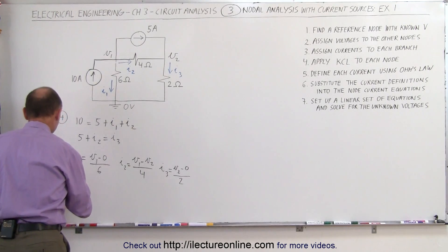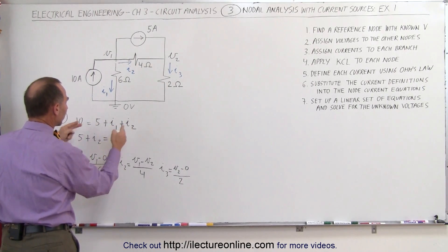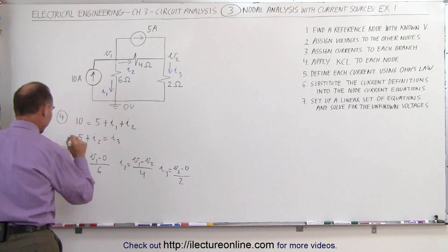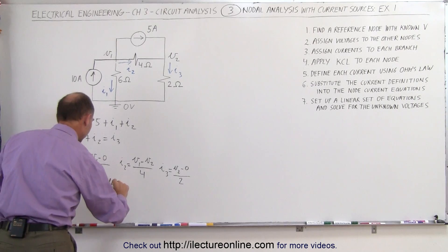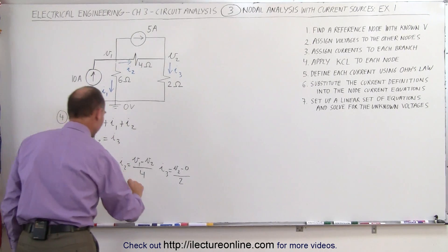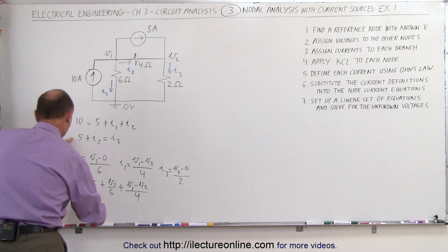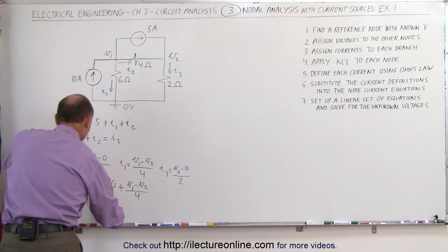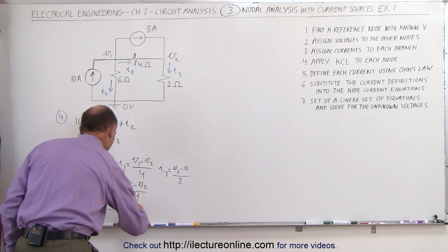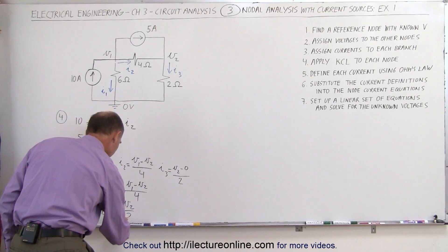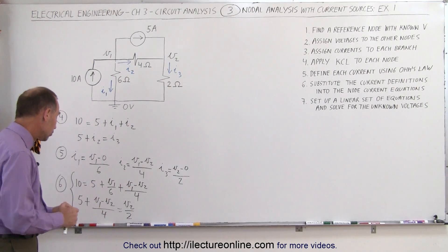Step 6 is to take those three current expressions and substitute them back into our two KCL equations. For the first equation, we get: 10 equals 5 plus V1 over 6 plus (V1 minus V2) divided by 4. The second equation becomes: 5 plus (V1 minus V2) divided by 4 equals V2 divided by 2. We now have two equations and two unknowns, V1 and V2.